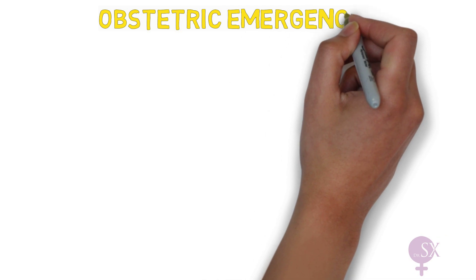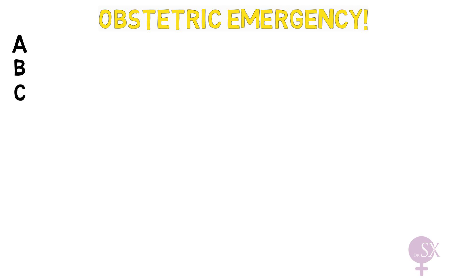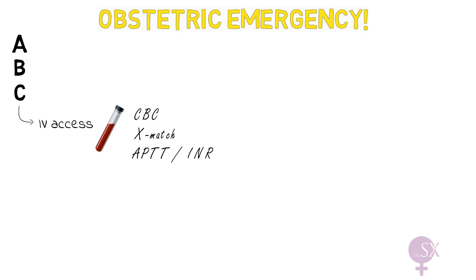PPH is an obstetric emergency. We treat it with ABC — airway, breathing, and circulation. We obtain IV access and take bloods including a CBC to assess the hemoglobin level, a cross-match so we can give a blood transfusion, and a coagulation screen with APTT and INR to assess for bleeding disorders. If the APTT and INR are deranged, we involve the hematologists and treat the bleeding disorder appropriately.